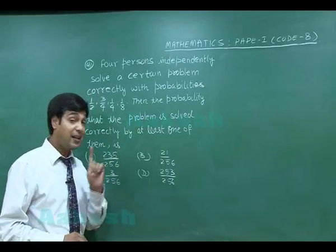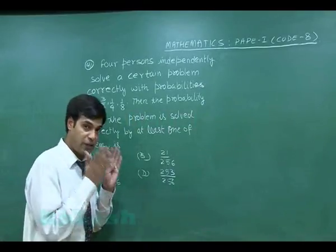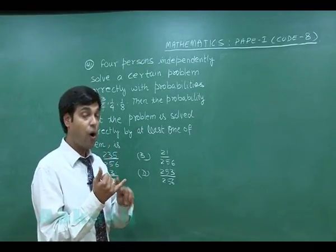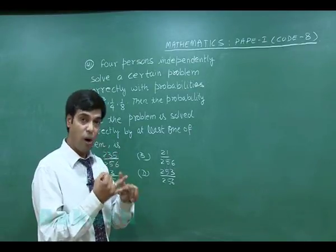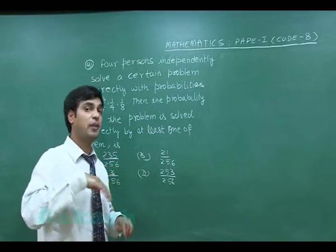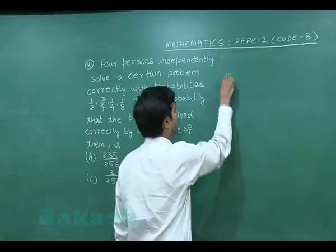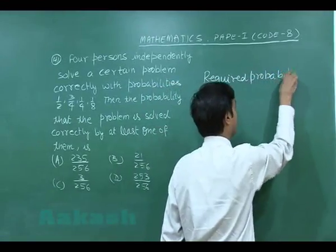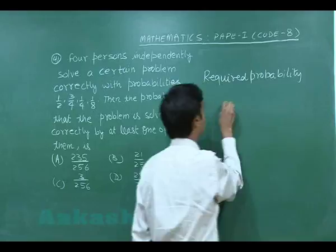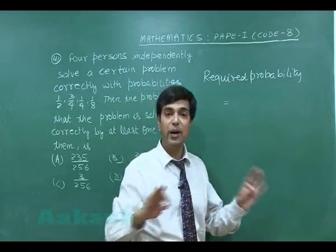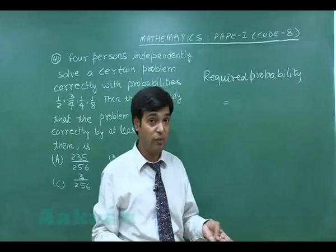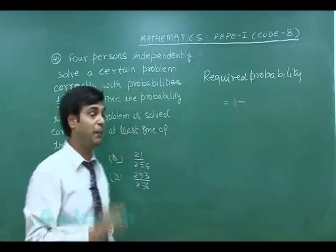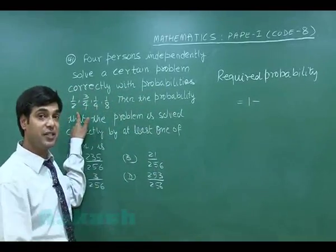The question is quite simple. 'At least one of them solves it correctly' can mean: exactly one person solves it, or exactly two, or exactly three, or all four solve it correctly. The better approach is: required probability equals 1 minus the probability that nobody solved it, because that gives us at least one solving.